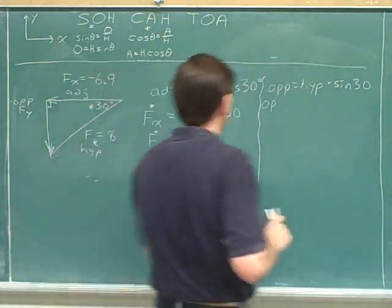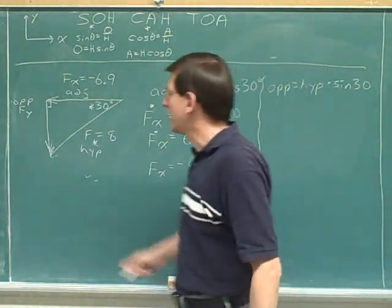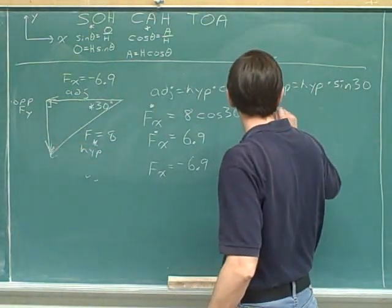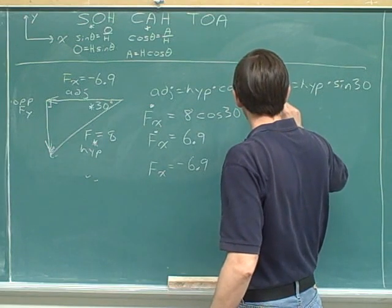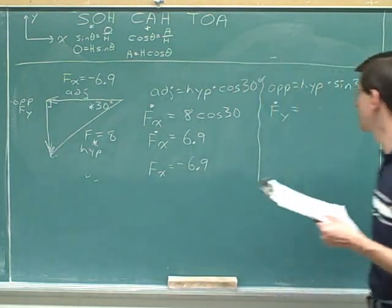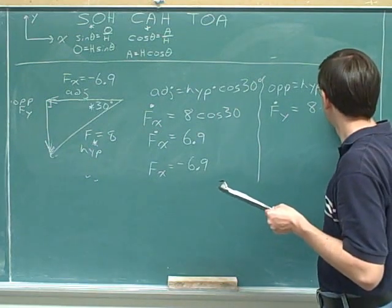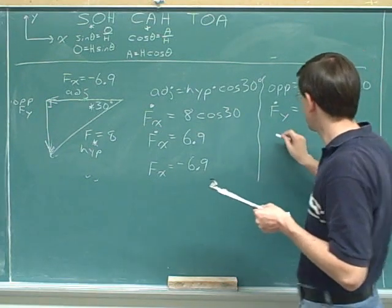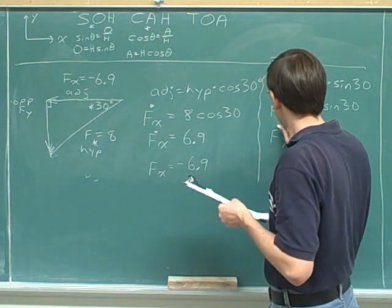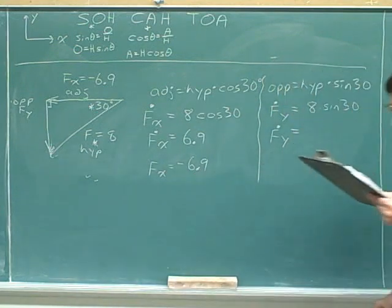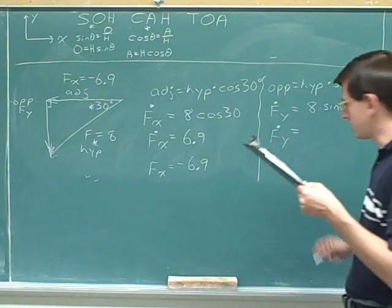Now we need a label for the length of the opposite side. That's f sub y. But again, I hope we put a dot in to show that that's just the length or magnitude. The hypotenuse was 8. The sine was 30. We're still talking about the variable with a dot. 8 times the sine of 30 is exactly 4.